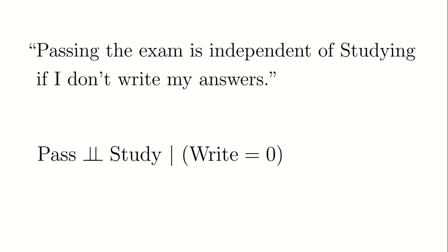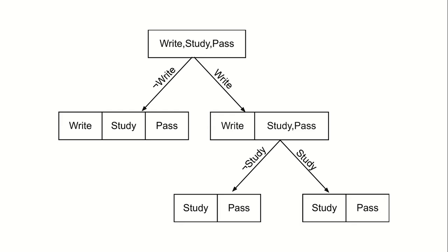A context-specific independence is an independence relation that holds for a subset of the sample space. For example, passing the exam is independent of studying if I don't write my answers.